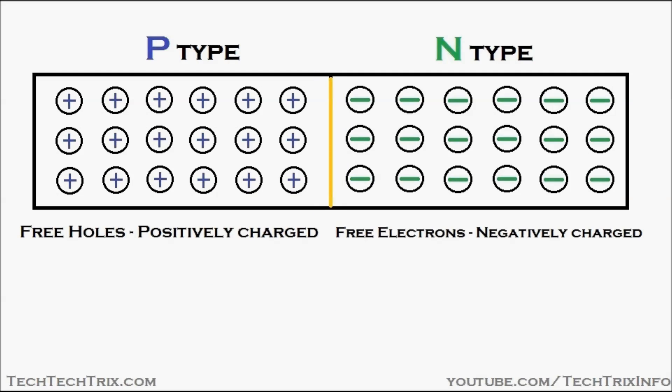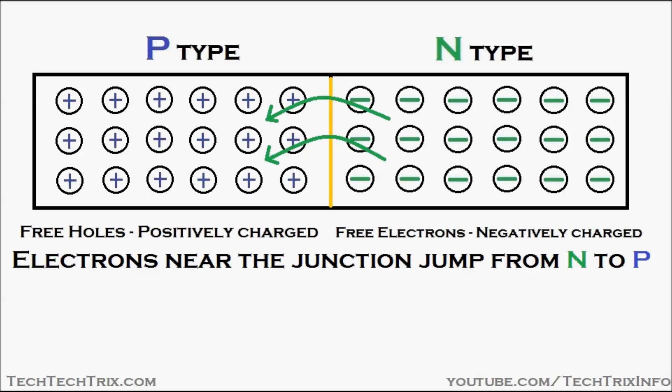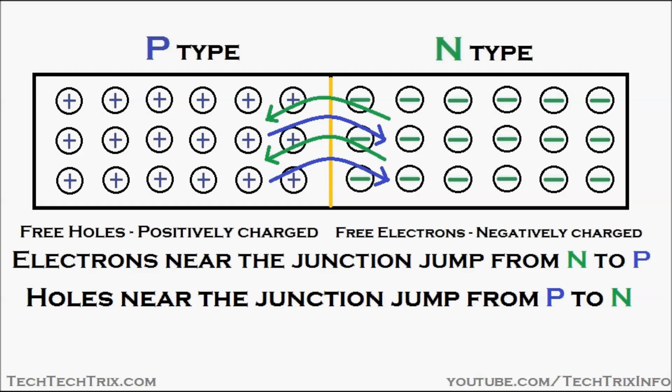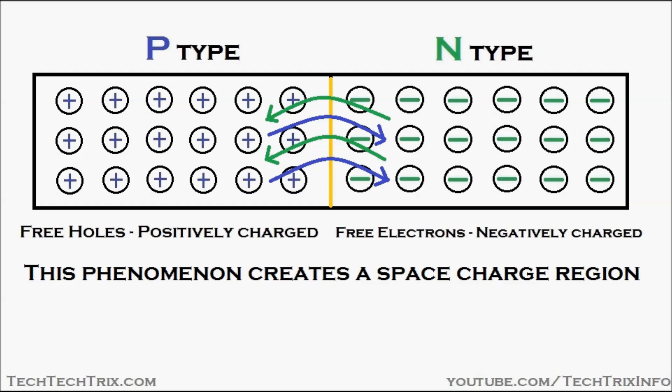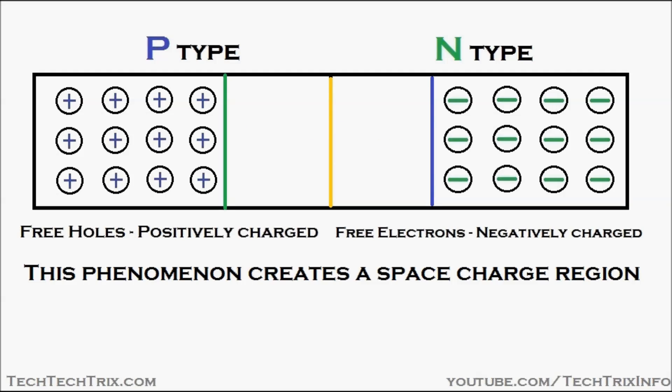What happens when a PN junction is made? Electrons near the junction jump from the N-type semiconductor towards the P-type semiconductor, and holes near the junction jump from the P-type semiconductor towards the N-type semiconductor. This phenomenon creates a space charge region at the junction, as shown in the animation.